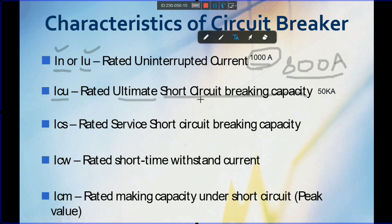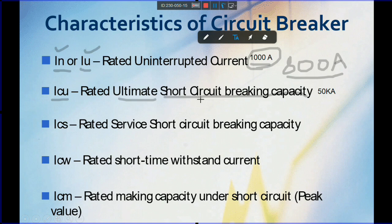When a short circuit happens — phase to neutral or phase to phase contacting directly without a load — the current is the short circuit current and it will reach very high values. For a 1000 amp breaker, if a short circuit happens, the current will go on increasing: 1000, 2000, 5000, 10,000, 20,000, 40,000, 50,000 amps. If the breaker trips at up to 50 kA, it won't get any damage. This is called the ultimate short circuit breaking capacity — the maximum acceptable breaking capacity of the breaker.